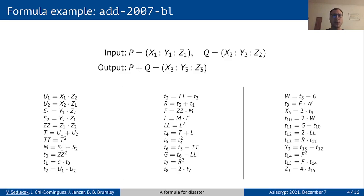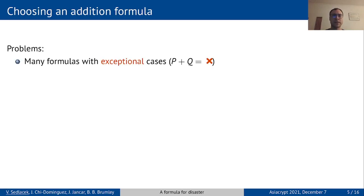Alright, but why does the formula matter? The problem is that many formulas have exceptional cases, meaning there exist points for which the formula doesn't compute their sum correctly. Often there are hidden assumptions for the formula to function properly, which can lead to behavior that the developer doesn't expect.